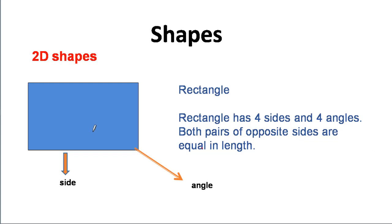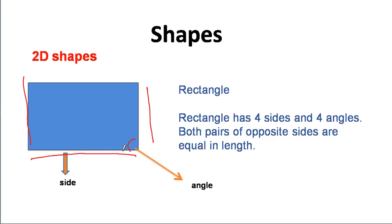First, Rectangle. Rectangle has four sides and four angles. Both pairs of opposite sides are equal in length. These sides and these sides are equal in length, and these sides and these sides are also equal in length.